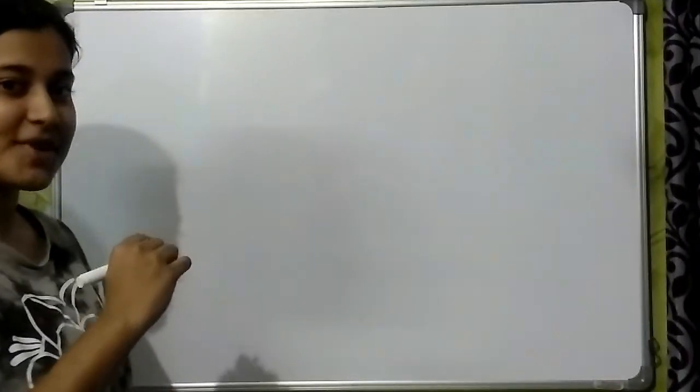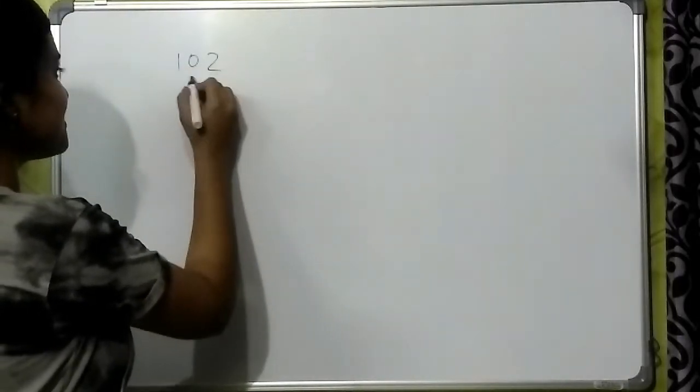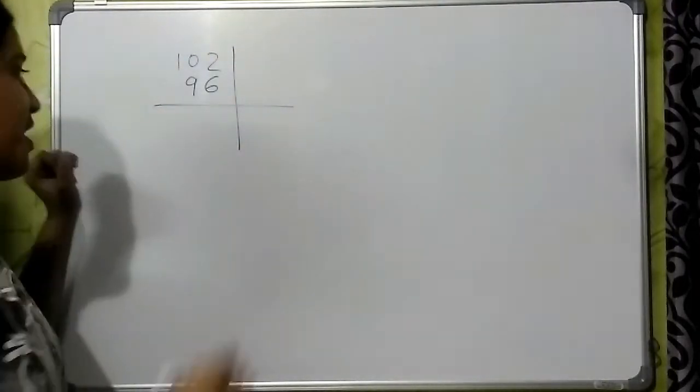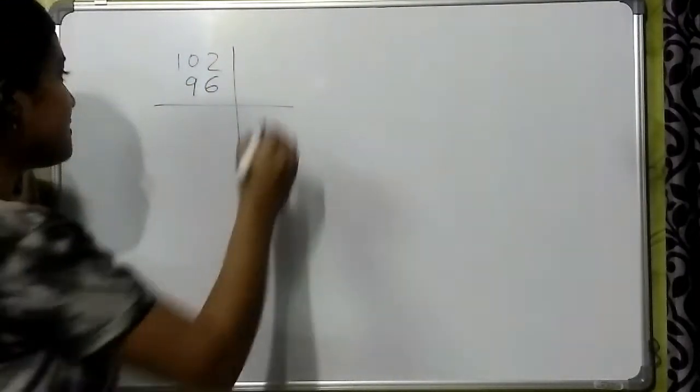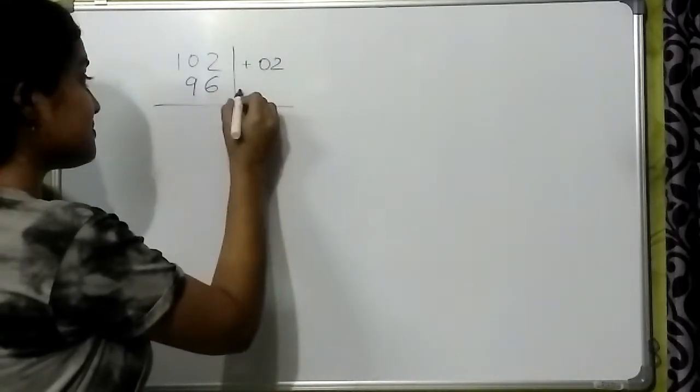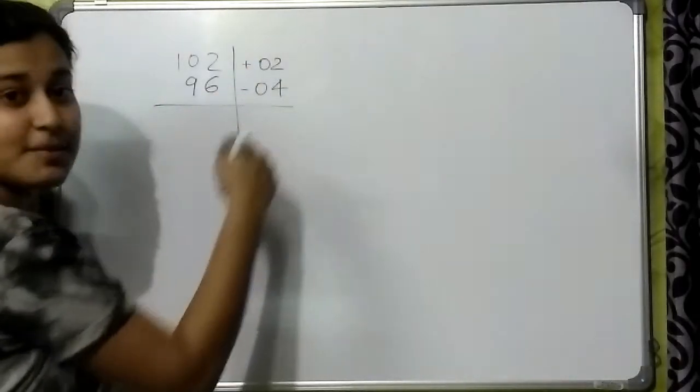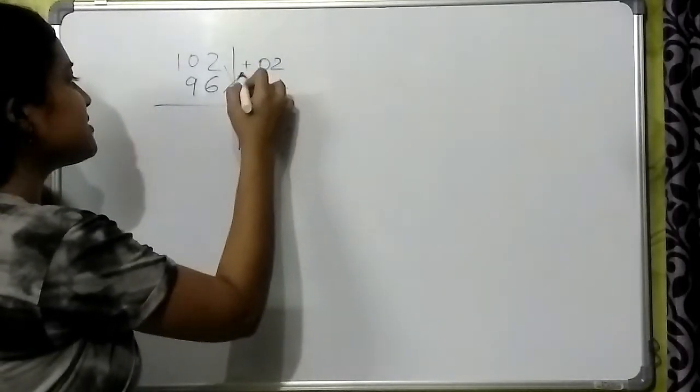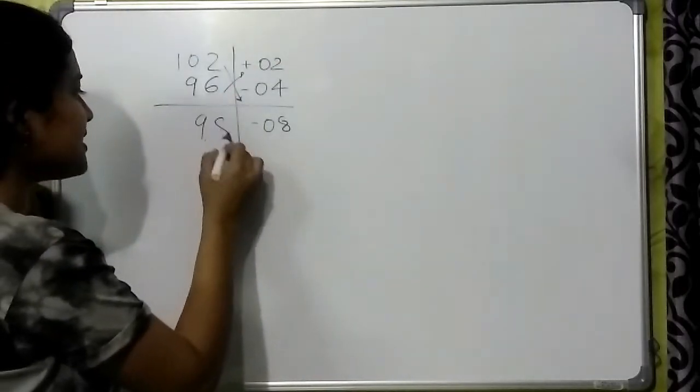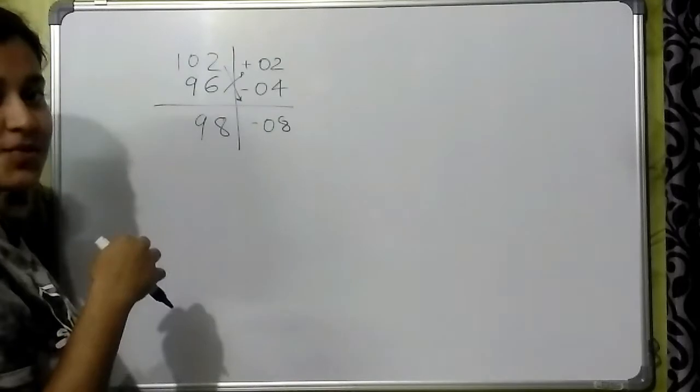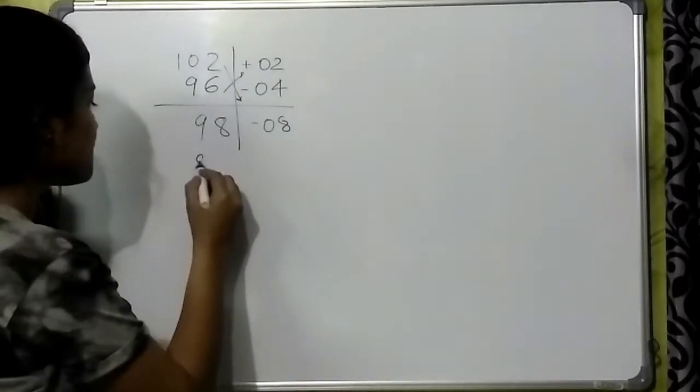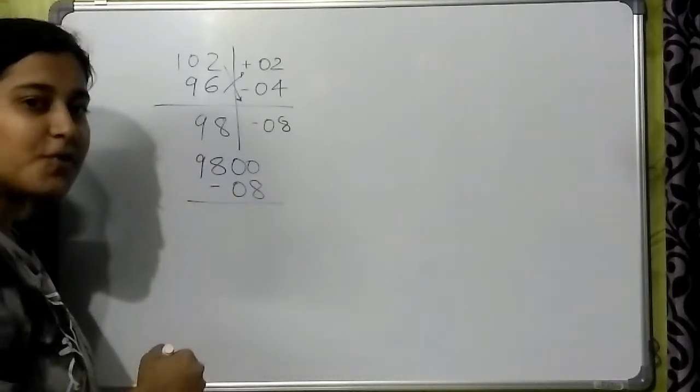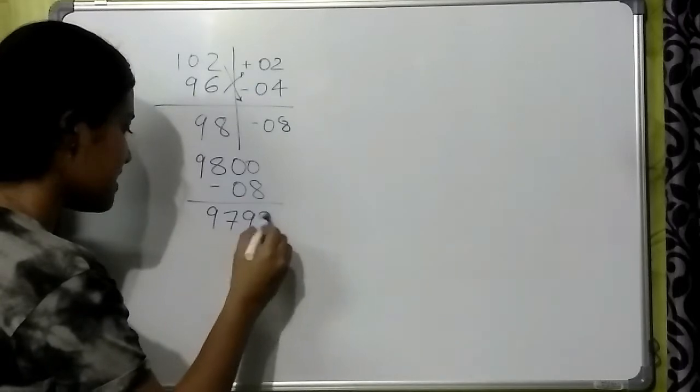Let us take some different numbers. Suppose we have these numbers. How do we proceed? Here the base is 100. How much does this differ from 100? Plus 2. This minus 4. When we multiply this we get minus 8. Let us do cross addition. Here we will get 98. How can we write the answer from this? I will show you. 9800 minus 08. This is what we have to do. And then we will get the answer.